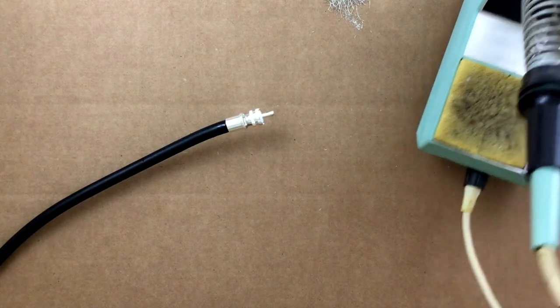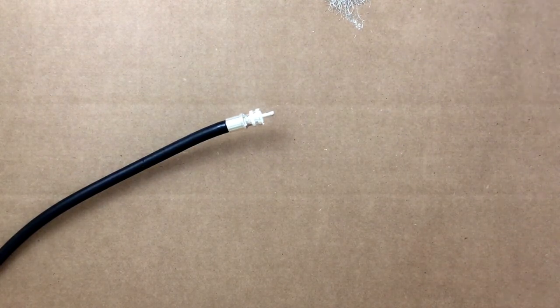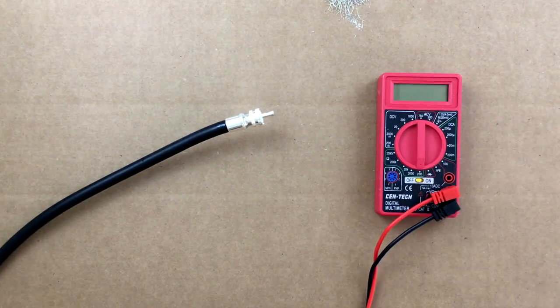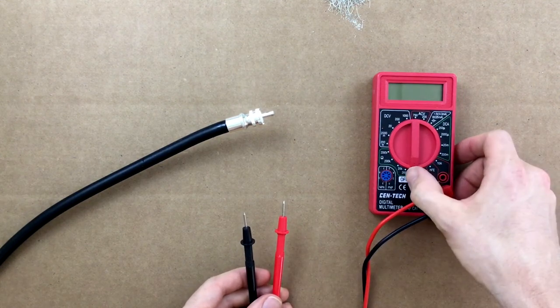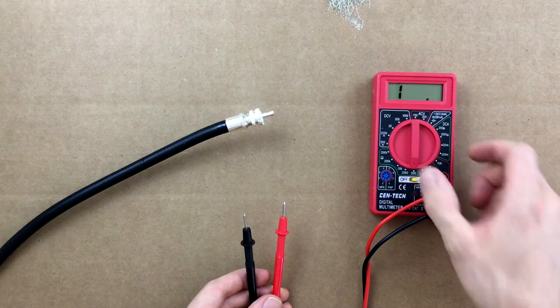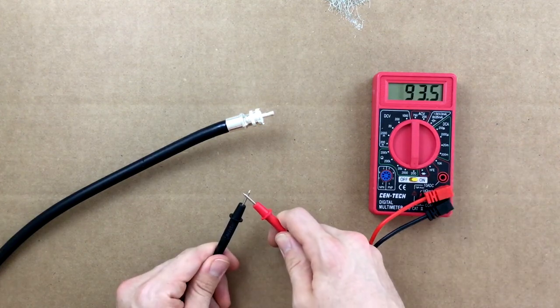Now we want to test our work and make sure we do not have an internal short. Grab an ohm meter and set it to the lowest ohm scale that it has. Touch the two leads together and it will show you that there is little to no resistance.